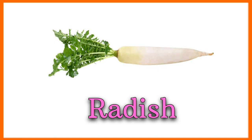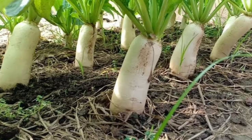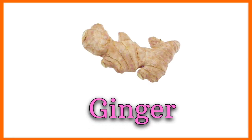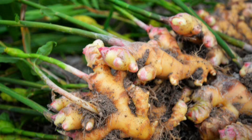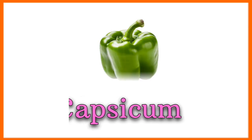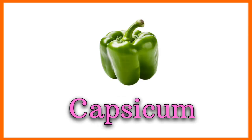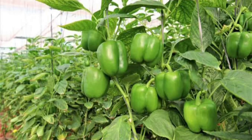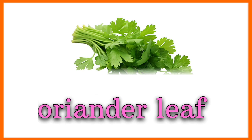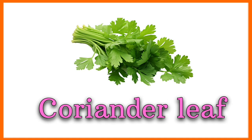This is pea. This is radish. This is ginger. This is capsicum. This is banana. This is coriander leaf.